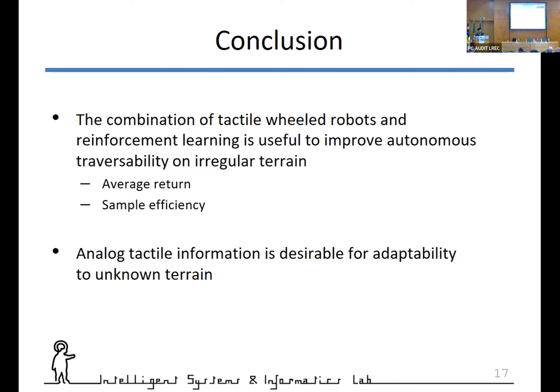Thank you, it is a very interesting idea. I have a question: are you planning to consider deformable terrain? Currently it was even versus uneven, but deformable terrain means, for example, elastic terrain which reshapes temporarily under the wheel and returns to normal shape, or plastic terrain which undergoes permanent deformation, like sand, which produces grooves and motion resistance. Could you comment on this issue?